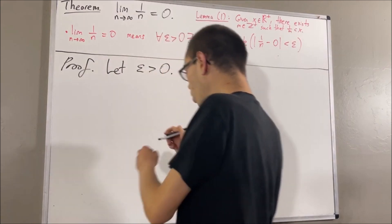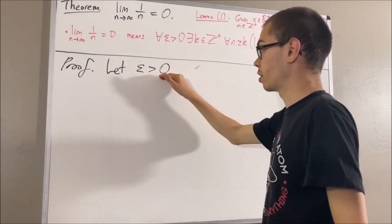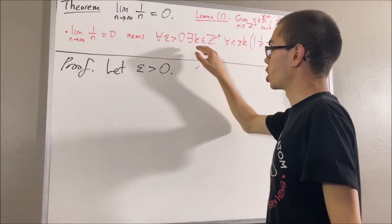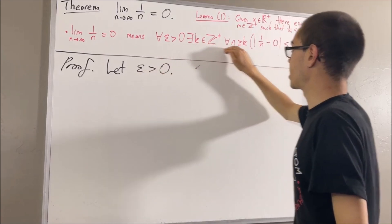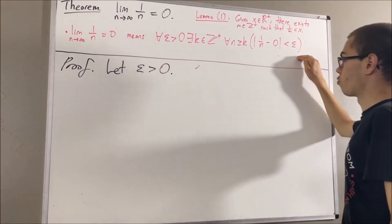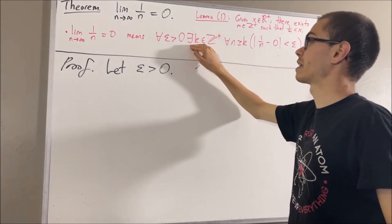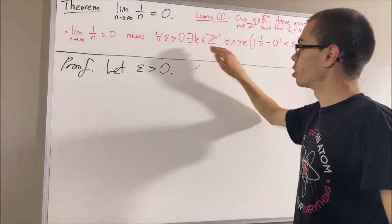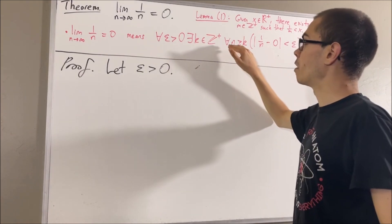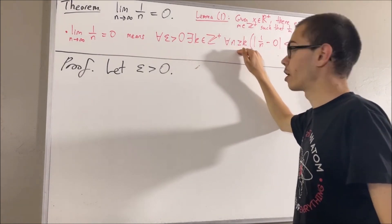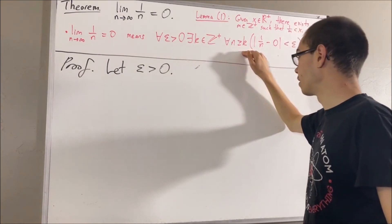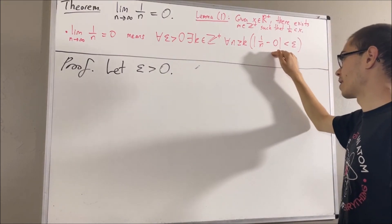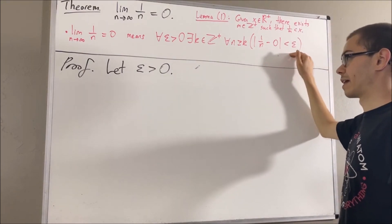And with this arbitrary epsilon greater than 0, we want to show that there exists a positive integer k which satisfies: for all positive integers n greater than or equal to k, the absolute value of 1 over n minus 0 is less than epsilon.